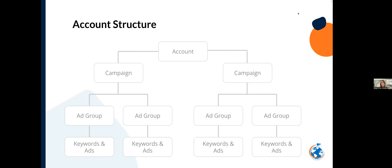The account structure in a Google Ad Grant account works the same way as a paid Google Ads account. Within your account, you have multiple campaigns — you can target multiple goals and audiences simultaneously. Within each campaign, you have ad groups, which are the containers for keywords and ads. This structure is the same whether you're working in an Ad Grant account, a paid account, or even Microsoft — Microsoft clearly mirrors Google, so once you have Google down, the transition to Microsoft is easy.